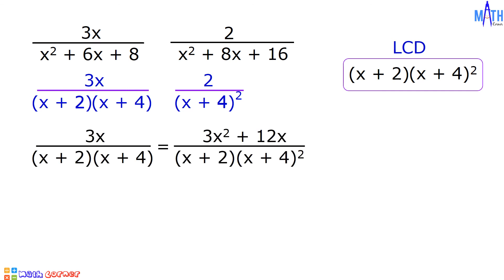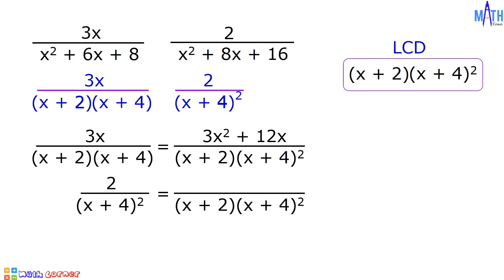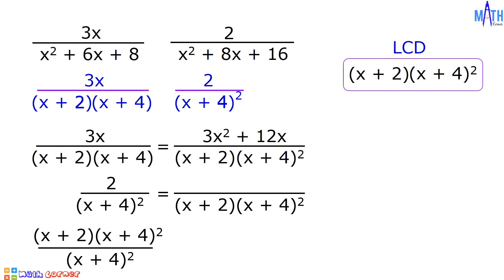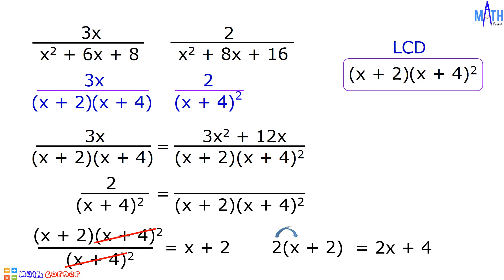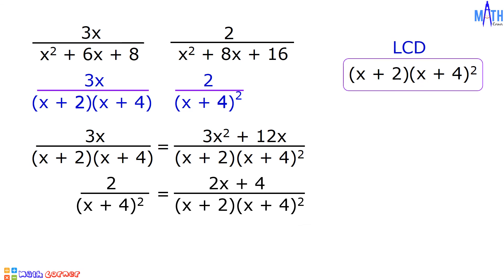Next, let us convert 2 over (x plus 4) squared to an equivalent expression having the LCD. Dividing the LCD by (x plus 4) squared and canceling common factors, we are left with x plus 2. Multiplying 2 by (x plus 2): 2 times x is 2x and 2 times 2 is 4, giving us 2x plus 4. So we have 2x plus 4 over (x plus 2)(x plus 4) squared. And we are done finding the LCD of rational expressions and converting rational expressions to an equivalent expression having the LCD.